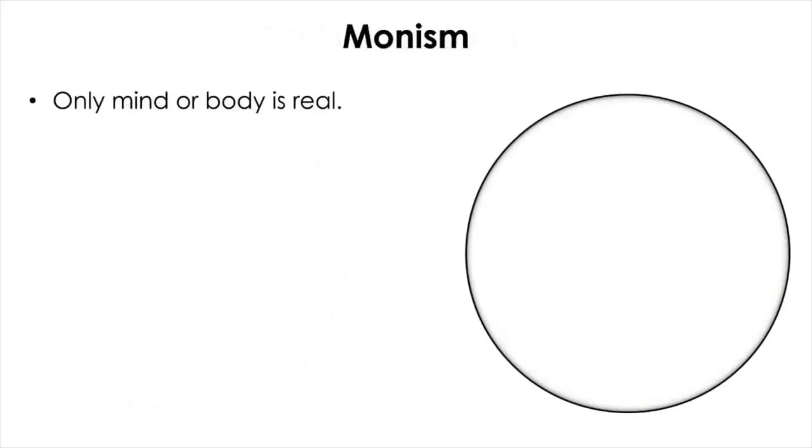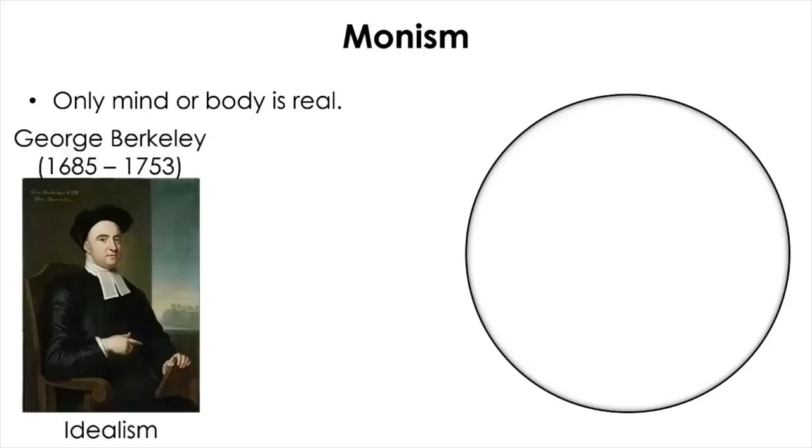Depending upon which one of them you see as real, a monist can be an idealist who thinks that only mind is real. So for an idealist, physical world does not exist, and the world around us is a mere creation of mind that is sent from God. An example historical figure from this camp of thought is the Irish philosopher, Bishop George Berkeley.